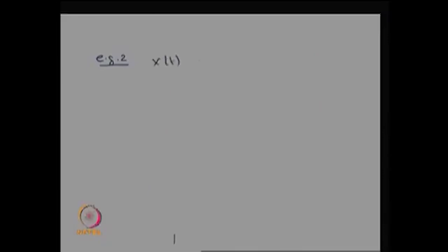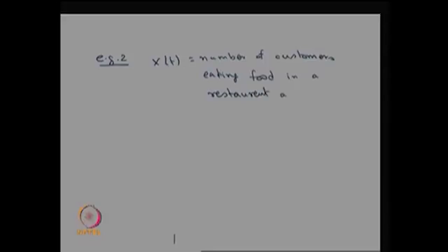Example 2: let x(t) be the number of customers eating food in a restaurant at any time t. So here you are observing the system — you are observing the restaurant — to count how many customers are eating food at any given time.